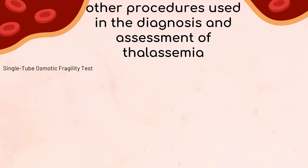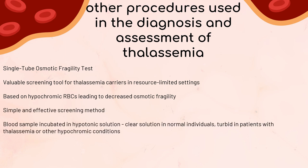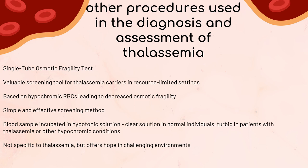In resource-limited settings, the single-tube osmotic fragility test is a valuable screening tool for thalassemia carriers. Carriers have hypochromic RBCs with decreased osmotic fragility. A blood sample is incubated in a hypotonic solution; in normal individuals, RBCs will lyse, resulting in a clear solution. In patients with thalassemia or other hypochromic conditions, RBCs won't lyse and the solution remains turbid. While not specific to thalassemia, this test serves as a valuable screening method in areas with limited resources.